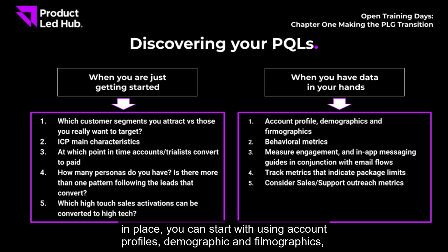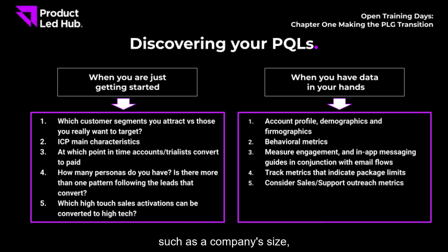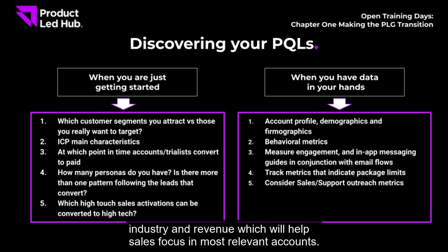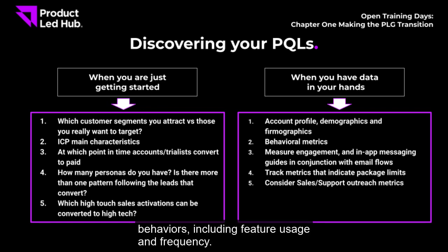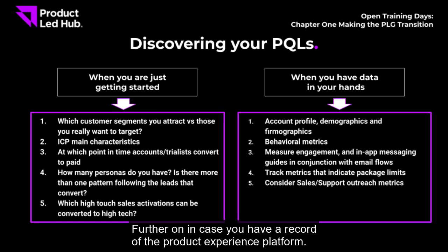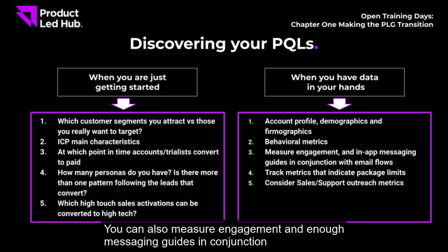If you already have product data in place, you can start using account profiles — demographics and firmographics such as company size, industry, and revenue — which will help sales focus on the most relevant accounts. You can also add behavioral metrics to measure and discover converting behaviors, including feature usage and frequency.